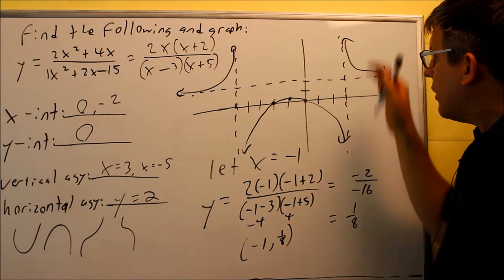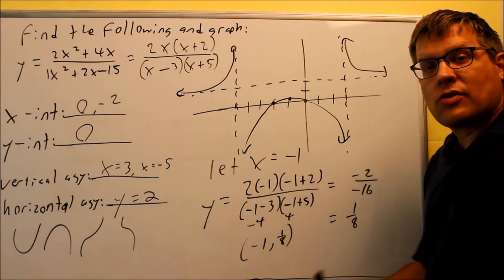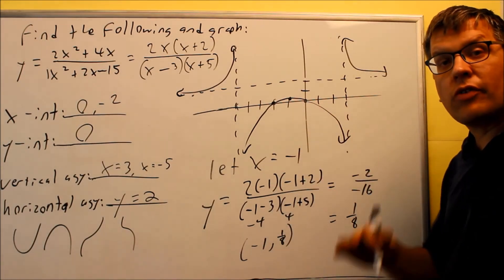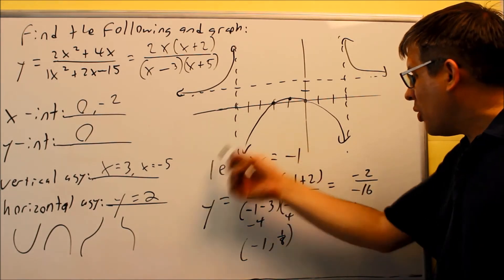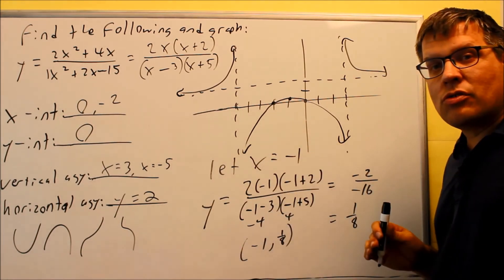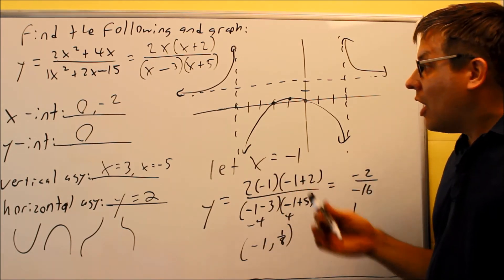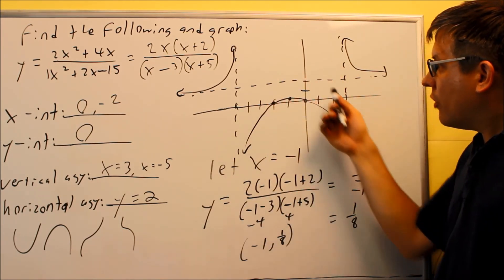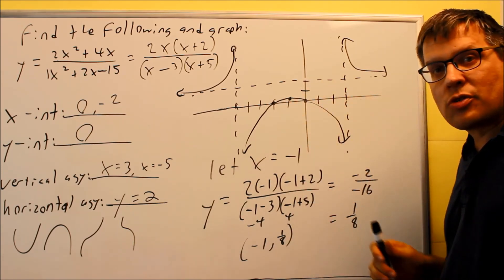That gives us the completed graph. We only needed one test point here and none for the outside sections — it all depends on the equation. Sometimes the graph gives you enough information on its own, and sometimes you may need more test points.